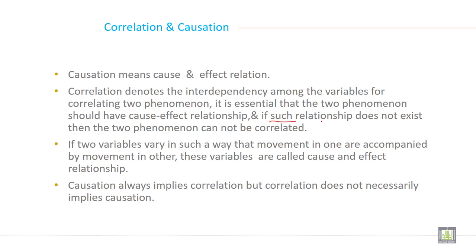If two variables vary in such a way that movement in one are accompanied by movement in other, these variables are called cause and effect relationship. Causation always implies correlation but correlation does not necessarily imply causation.